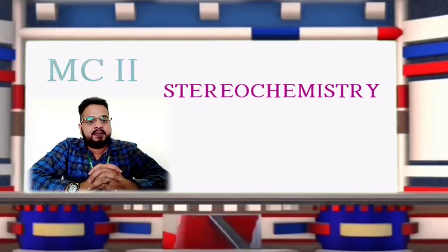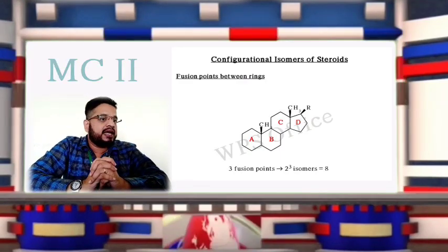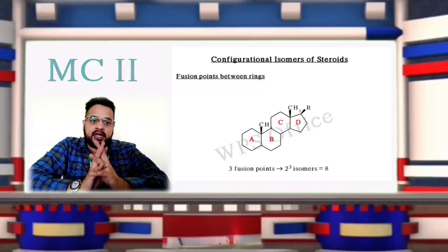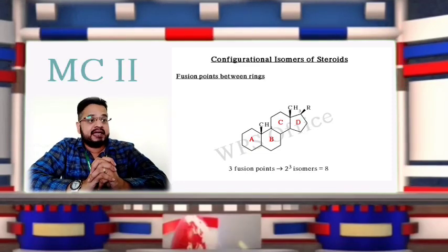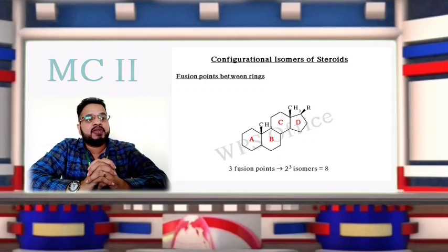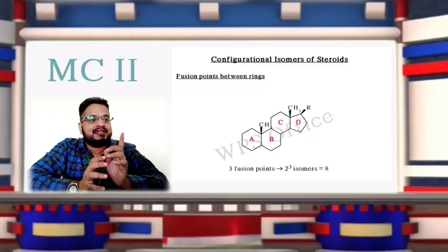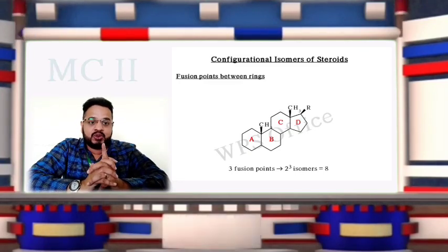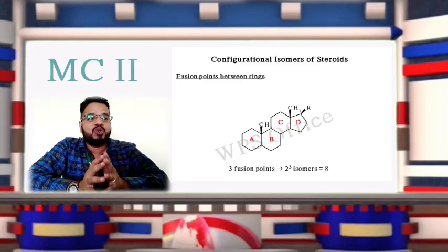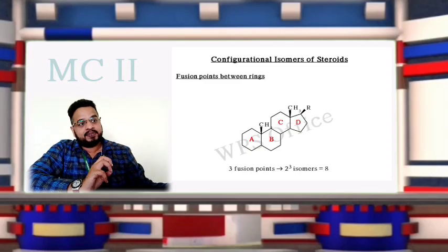Let us begin with the basic nucleus. As you can see here, this is the basic steroidal nucleus. The A, B, and C rings are the cyclohydroperhydrophenanthrene ring, and the D ring is the cyclopentane ring. The total number of fusion points are 3, so 2 raised to 3 — that means 8 configurational isomers are possible for this steroidal ring.